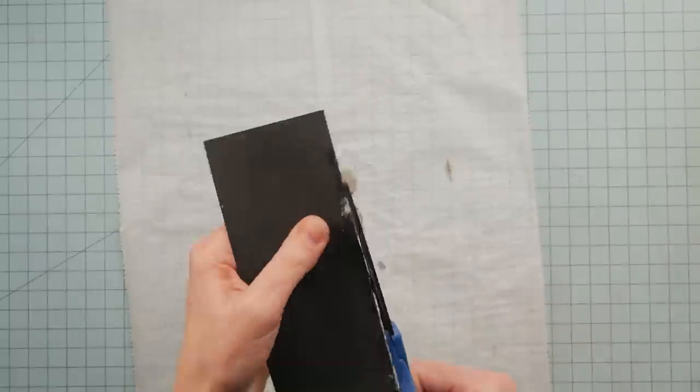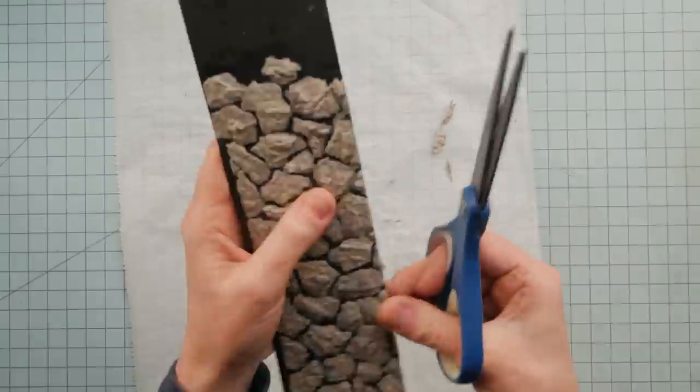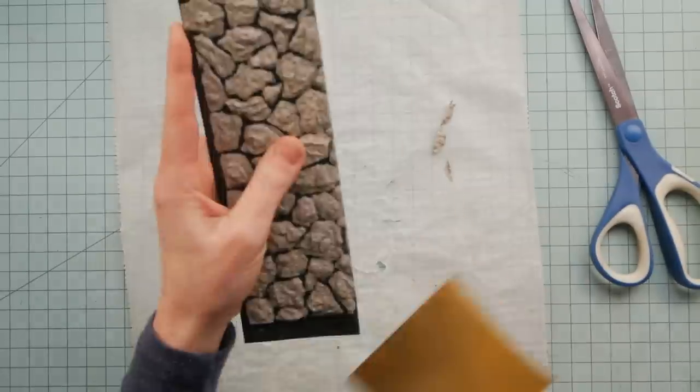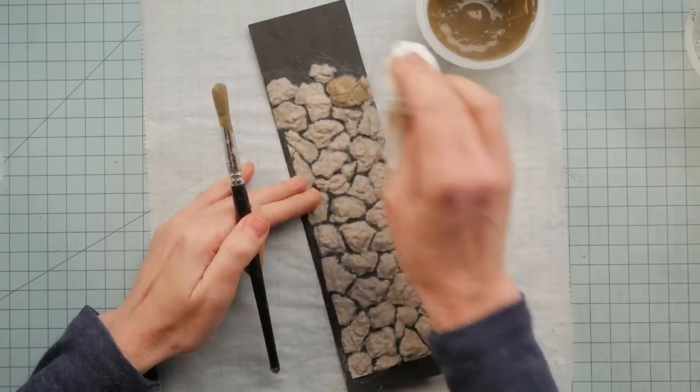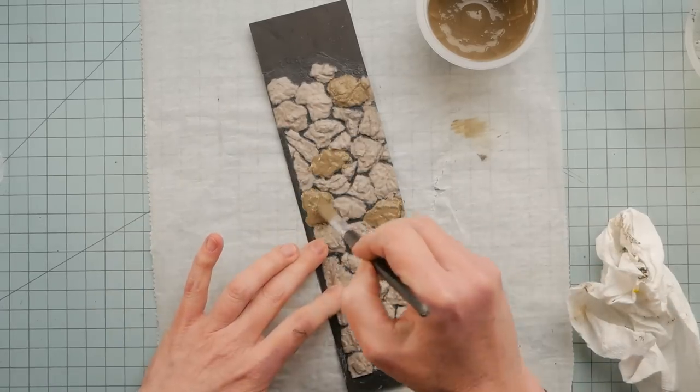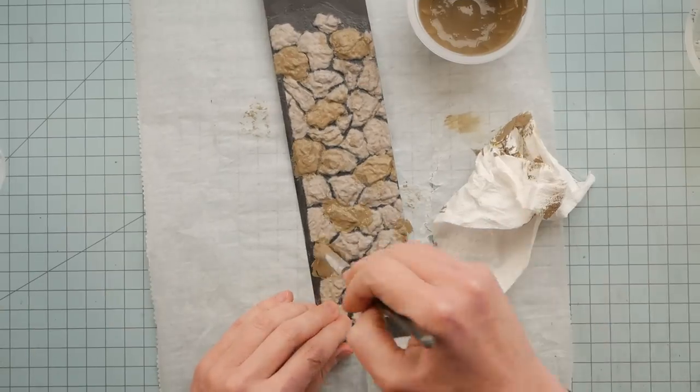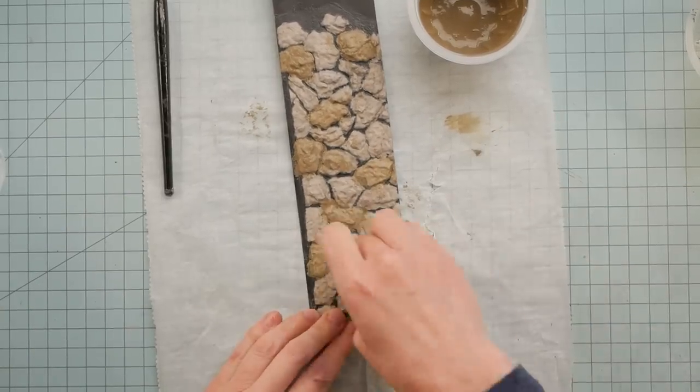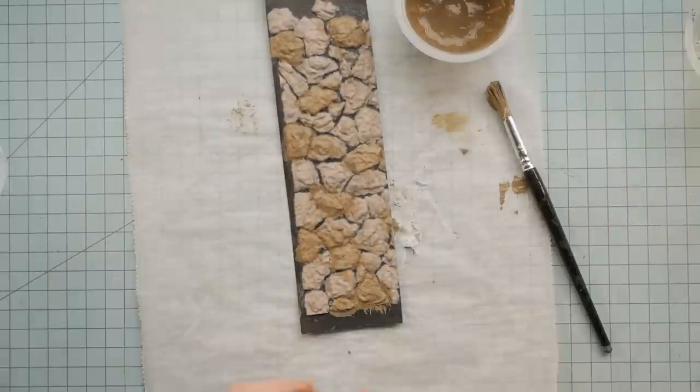Once it's dry, I trimmed off the rough edges and even gave it a little bit of a sanding because it's going to fit in kind of a small spot. Once that was done, I made some paint wash in some different colors that were, you know, stone colors, which stones come in all colors. So I did kind of this khaki brown.